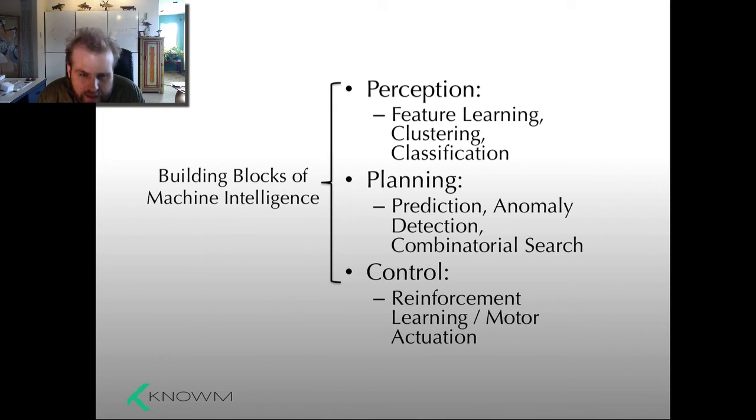And something called reinforcement learning. The ability to learn how to control something in the environment to attain a goal or reward. And when you pull all these things together, you end up with, well, the building blocks of machine intelligence. And our goals, our main goal in GNOME Inc. and with AHA Computing, is to solve the same types of problems that brains solve.